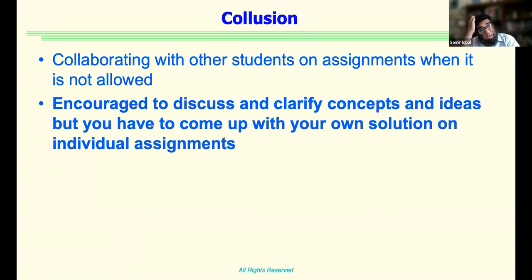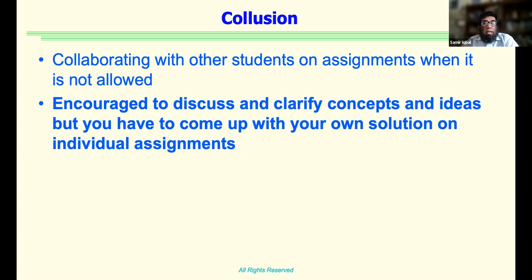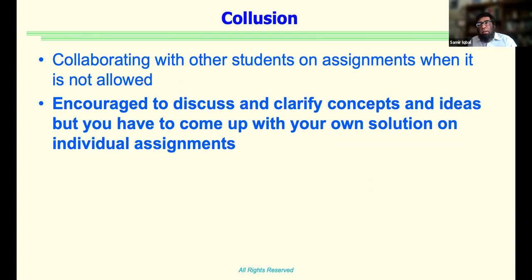Collusion is when you're not allowed to work together but you do. You can discuss and clarify concepts and ideas, but what you do on paper — the work or solution — has to be your own. That's the very fine distinction between working together and colluding.